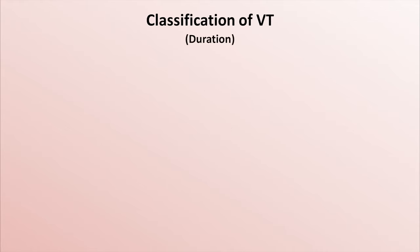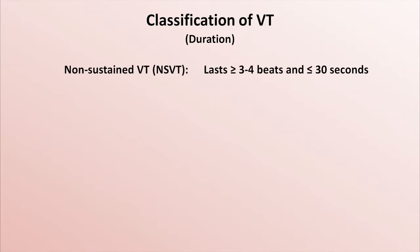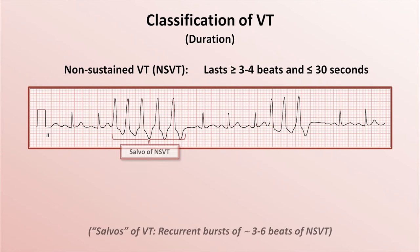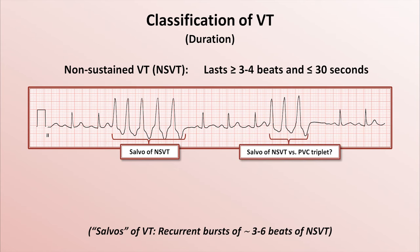When considering duration, there are two basic categories. Non-sustained VT, usually abbreviated NSVT, is an episode of VT that lasts at least either 3 or 4 beats, but less than or equal to 30 seconds. Here's an example of some NSVT. The term salvo is sometimes used to describe recurrent bursts of 3 to 6 beats. Regarding the second set seen here, some clinicians would refer to this as a salvo, while others might call it a PVC triplet — that is just semantics.